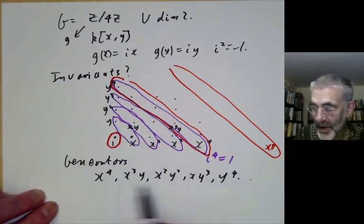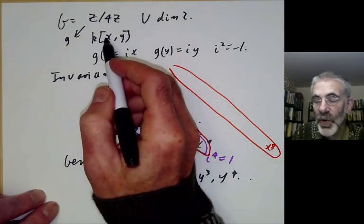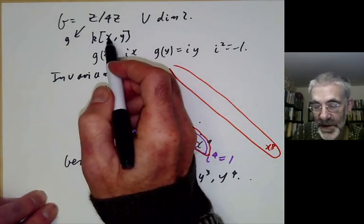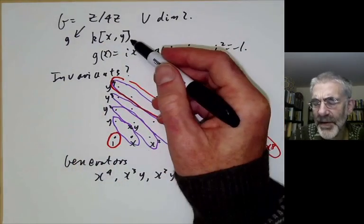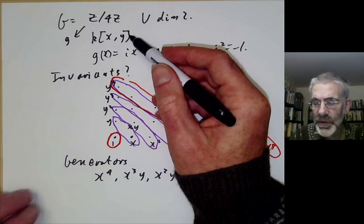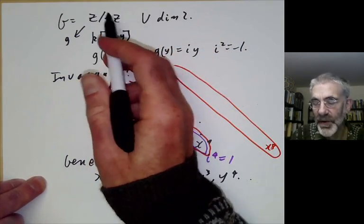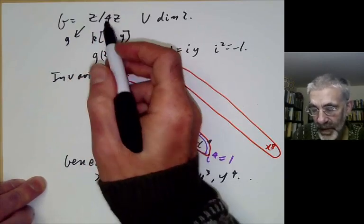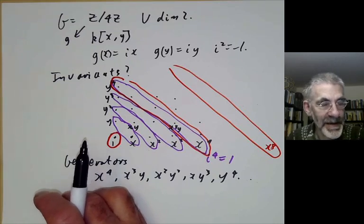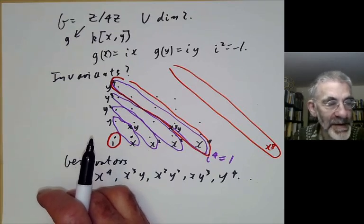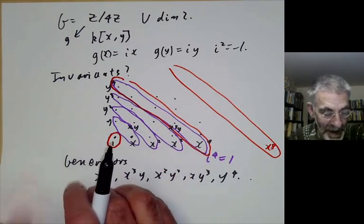The two cases I've given — the symmetric group and the cyclic group of order 4 — are misleadingly easy. The ring of invariants in general turns out to be really huge, and most of the time is just too complicated to write down explicitly.